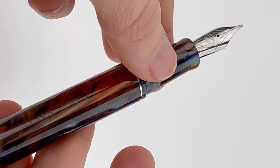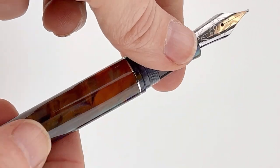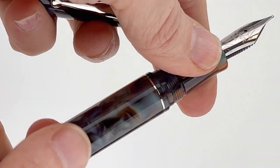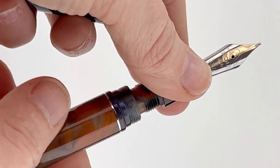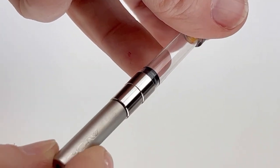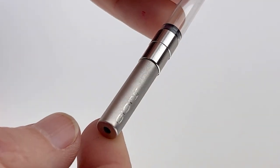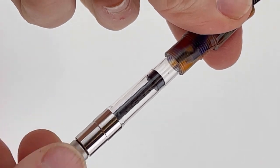The name Alba means sunrise, and they intended to encapsulate the sun rising over the gorgeous Gulf of Naples in this resin, and I think they did a great job. It's a cartridge converter fountain pen with a really great converter that I particularly like.